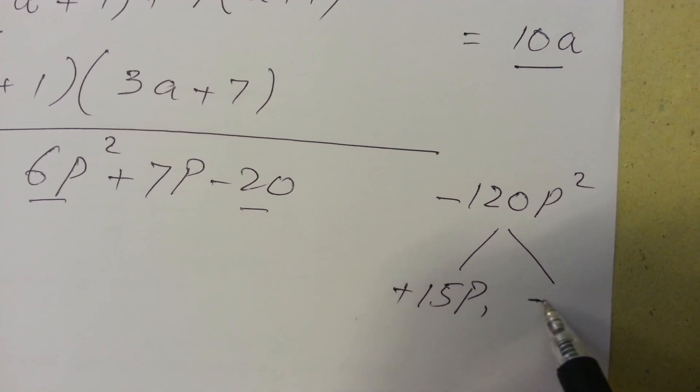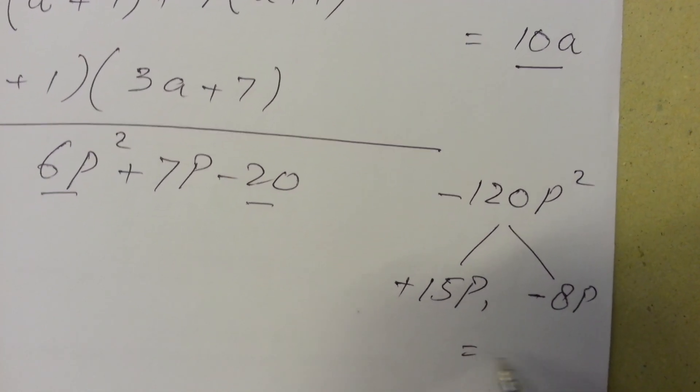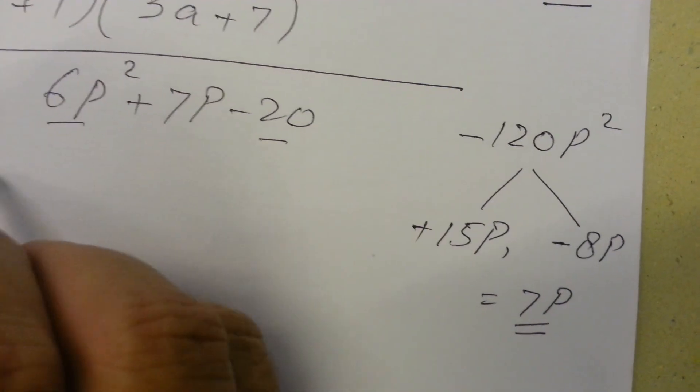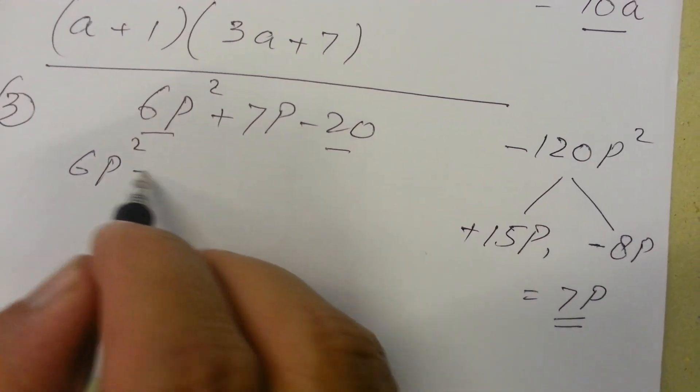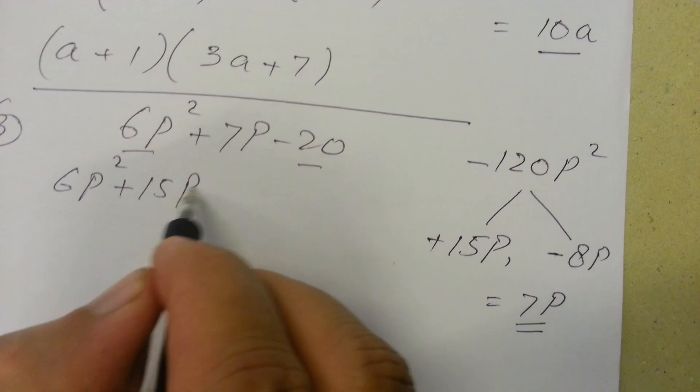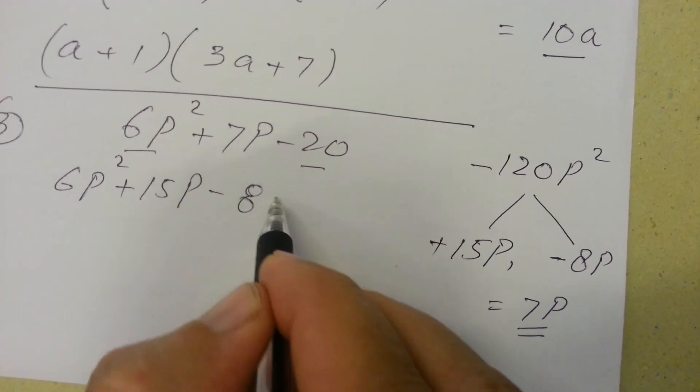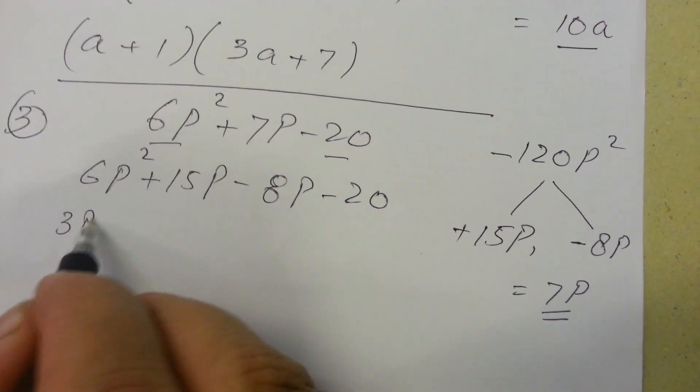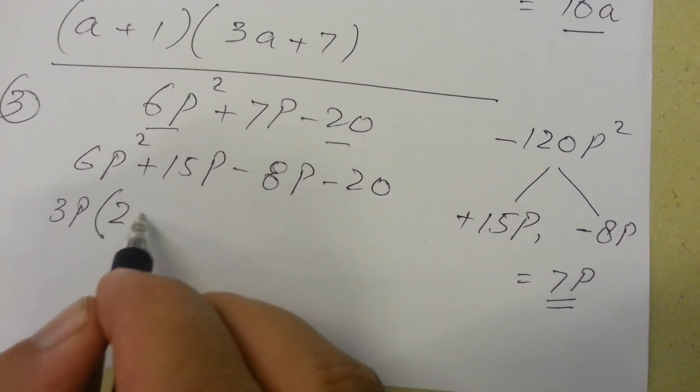On addition or subtraction: 6p² + 15p - 8p - 20. Taking 3p common, we will get 2p + 5...